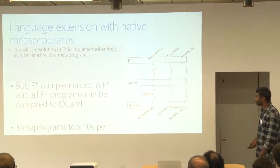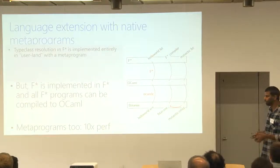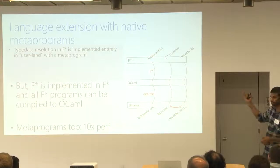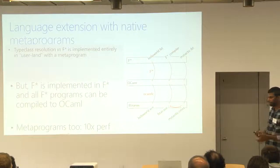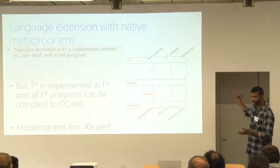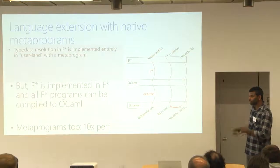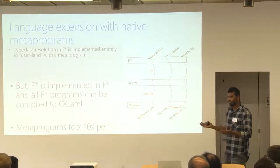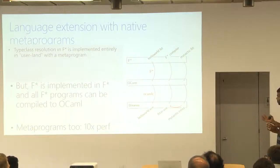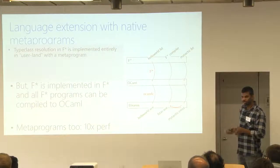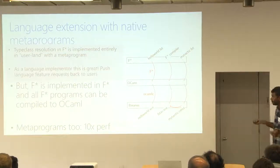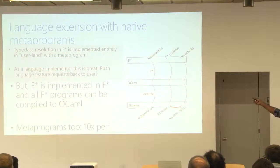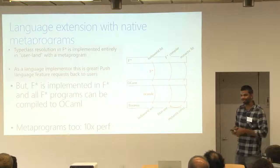So what this means is that many core language features that you would expect to be implemented primitively in a language like type classes. Type classes in F-star are not implemented inside the F-star compiler. They're implemented as a tactic by a user outside of F-star, who can customize how type class resolution works as they like. It doesn't change the trust hypotheses in the compiler, there's nothing trusted about type class resolution, and it runs at native speed. So as a language implementer, I love it. Essentially, every time I get a feature request like this, you know, the user can implement it themselves.